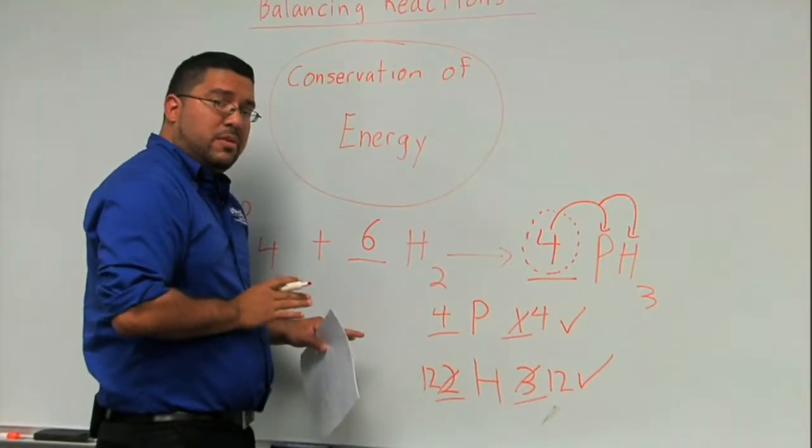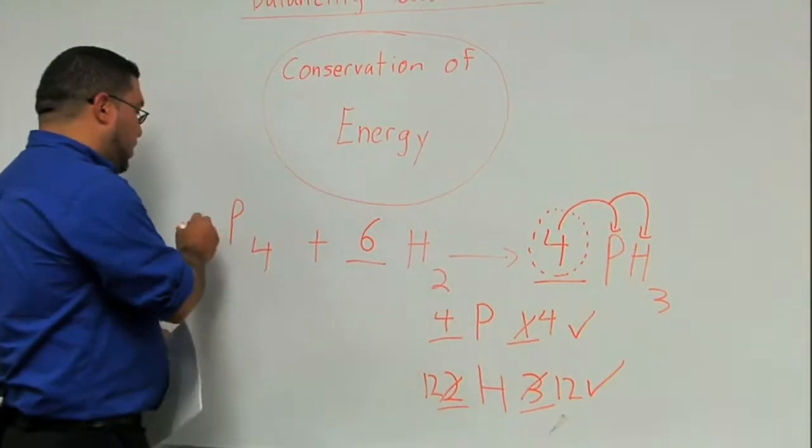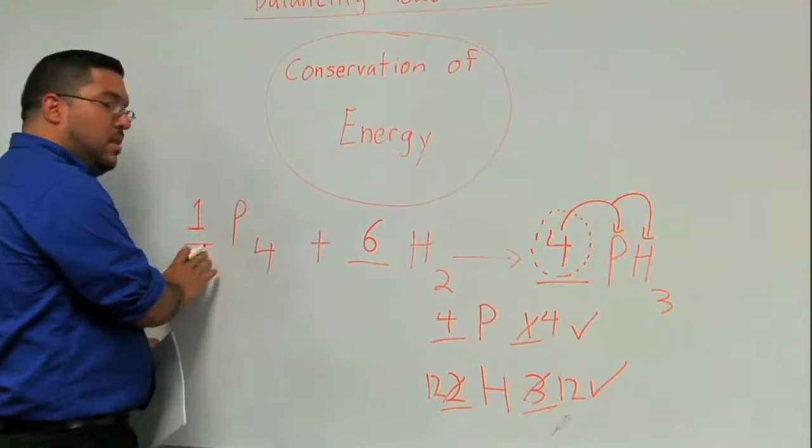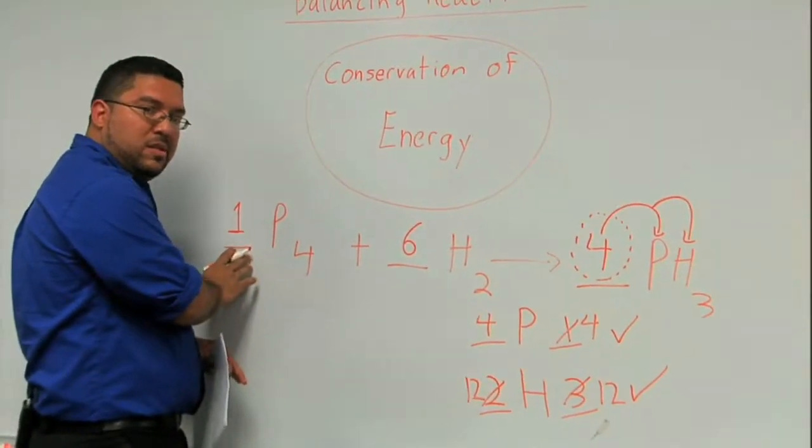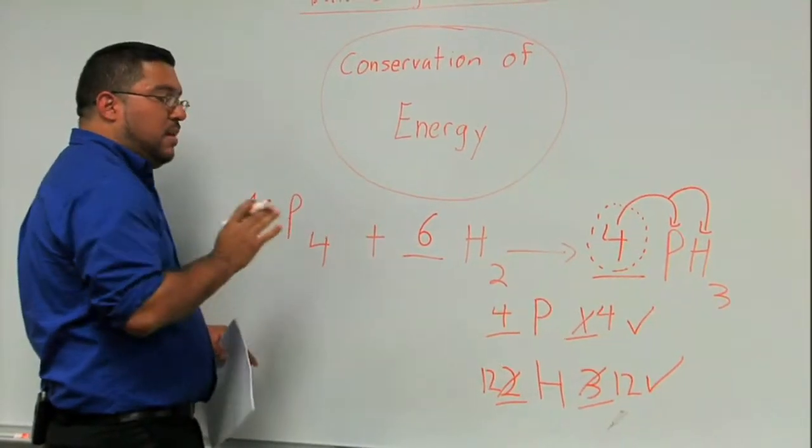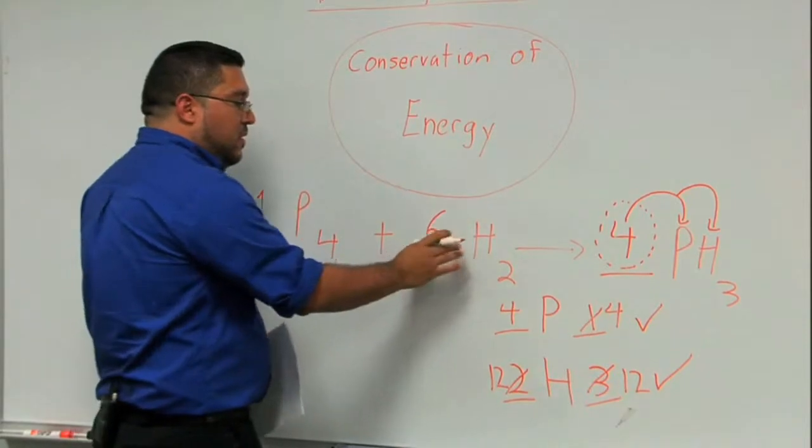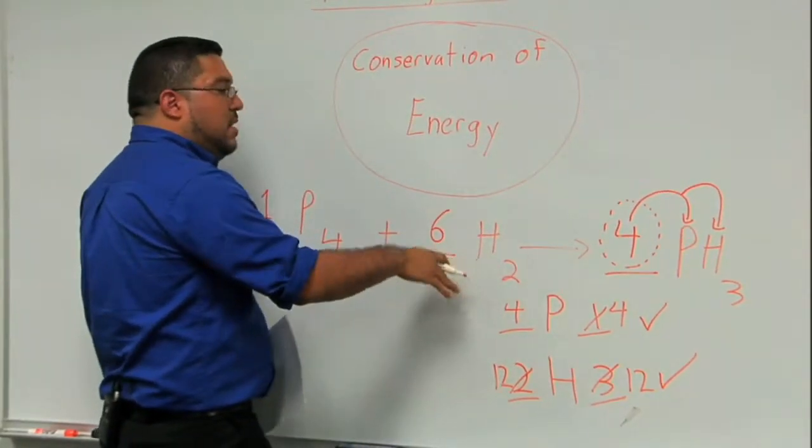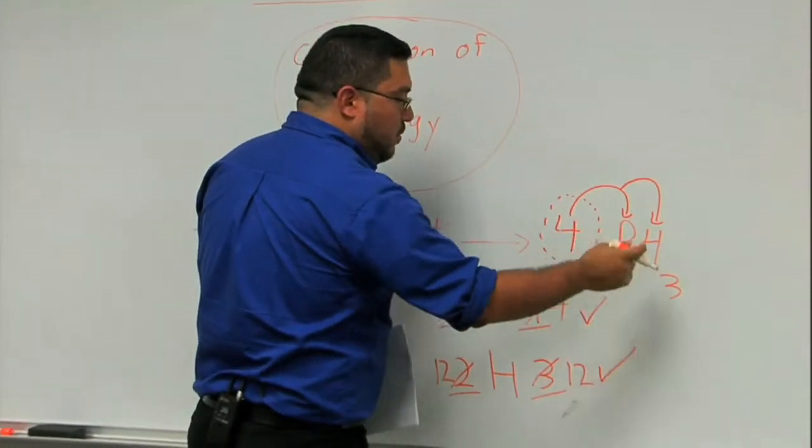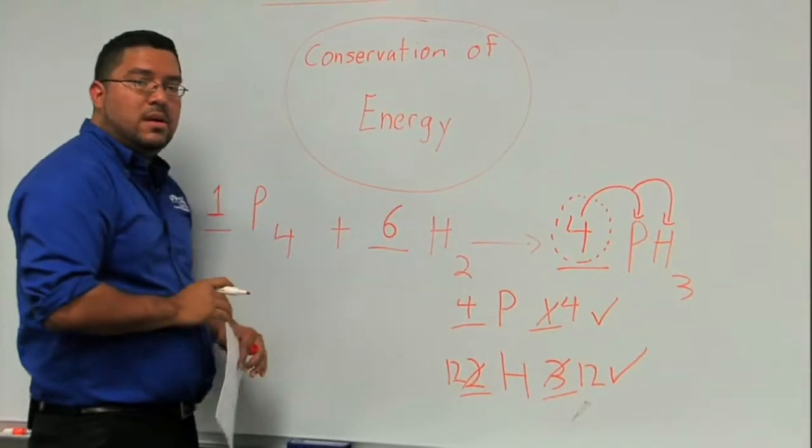The last thing you should do, if they ask you for the sum of the coefficients, is make sure that you put a one on any empty coefficient space. So this would be what is known as a balanced reaction: four phosphorus plus six hydrogen (six moles of H₂) reacting to produce four moles of PH₃. That would be a balanced reaction.